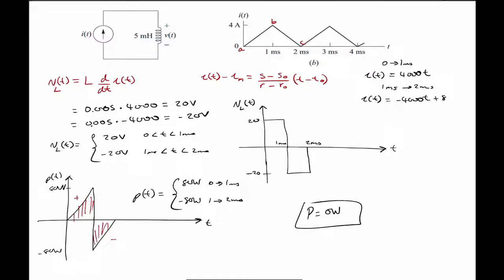Unlike a resistor, whose average power is always positive because it only absorbs power, inductors and capacitors are energy-storing devices. They can store energy and then return it, which is why their instantaneous power can be positive or negative, while their average power is zero. That's it for today's problem — see you in the next one!